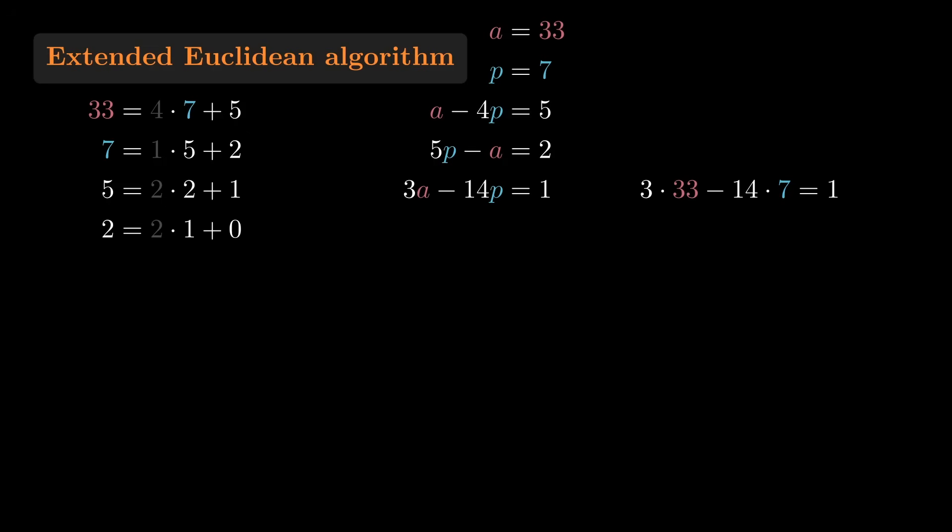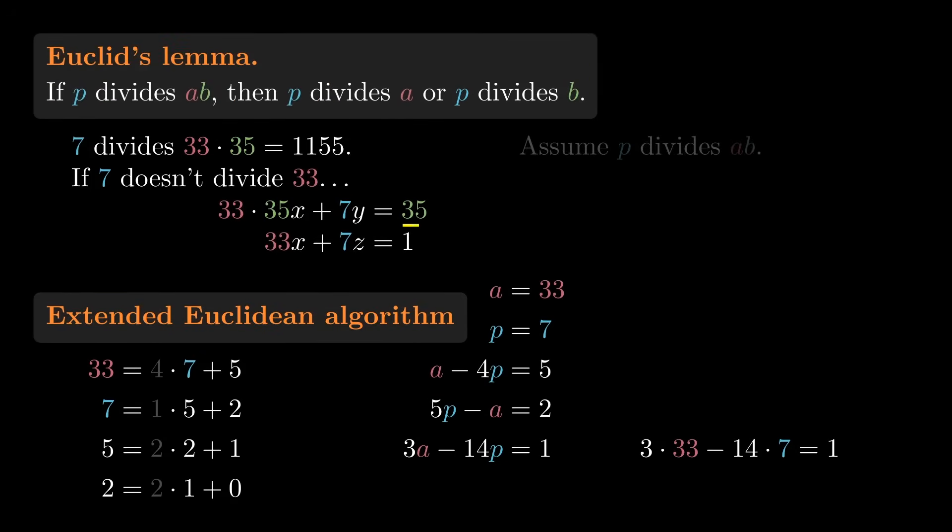What does that get us? Well, this equation is exactly of the form 33X plus 7Z equals 1. All we have to do is rearrange it.